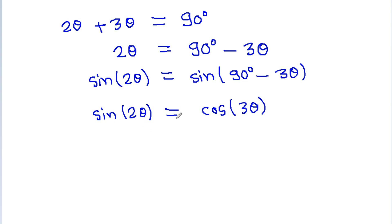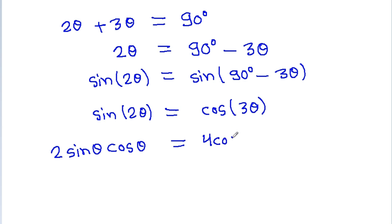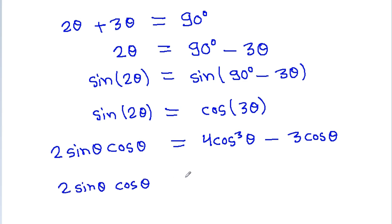Now expanding both sides: sine 2 theta becomes 2 sin theta cos theta, and cos 3 theta becomes 4 cos³ theta minus 3 cos theta. So we have 2 sin theta cos theta equal to 4 cos³ theta minus 3 cos theta.